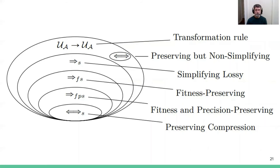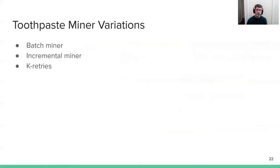There are some variations for toothpaste miner that are also covered in the paper. As well as the basic batch miner that I just ran through the example of, there is also an incremental miner and a version that does an optimization that involves multiple retries.